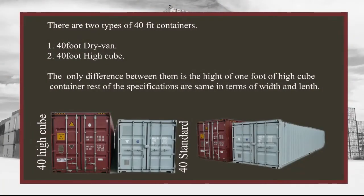There are two types of 40 foot containers: 40 foot dry van and 40 foot high cube. The only difference between them is the height — the high cube container is one foot taller. The rest of the specifications are the same in terms of width and length. Have a look below.